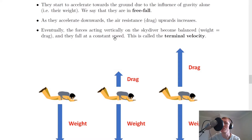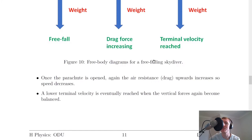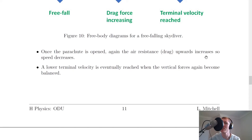Eventually the forces acting on the skydiver become balanced when weight equals drag, and they fall at a constant speed — this is called the terminal velocity. The drag upwards is balanced by the weight downwards, and the skydiver continues to fall at a constant speed. They will keep moving at that constant speed unless they do something else, like open a parachute. Once the parachute is opened, the air resistance or drag upwards increases again, so speed decreases. This is because the parachute creates a large surface area for air particles to push against, increasing the upward force.